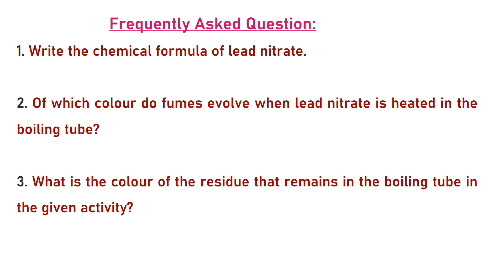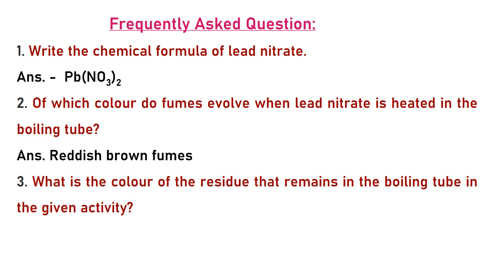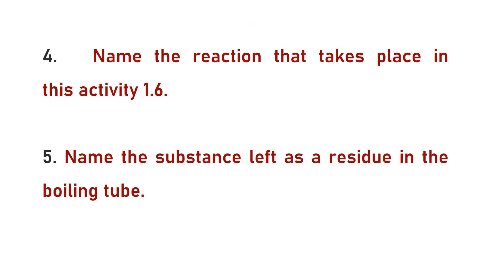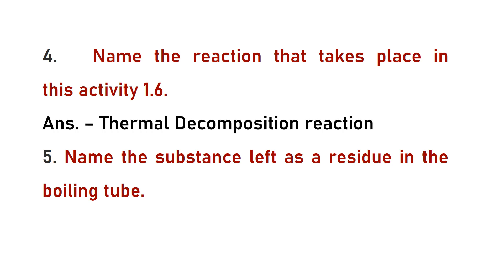Frequently asked questions: First — write the chemical formula of lead nitrate: Pb(NO₃)₂. Second — what color are the fumes when lead nitrate is heated? Reddish-brown fumes. Third — what is the color of the residue remaining in the boiling tube? Yellow color — that residue is lead oxide. Fourth — name the reaction: thermal decomposition. Fifth — name the substance left as residue: lead oxide; chemical formula PbO.